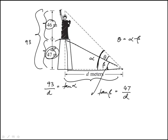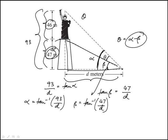So here I can isolate alpha: alpha is tan inverse of 93 over d. Beta is tan inverse of 47 over d. I'm looking for their difference, so theta is tan inverse of 93 over d minus tan inverse of 47 over d.